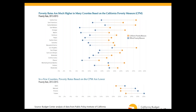On the difference between official poverty thresholds and official poverty guidelines: the thresholds are used for statistical purposes to determine who is counted as living in poverty. The guidelines are used for administrative purposes to determine eligibility for public programs — they are simplified versions of the thresholds, updated for inflation each year. More detail will be in the upcoming report.